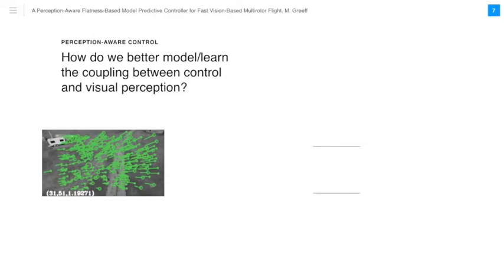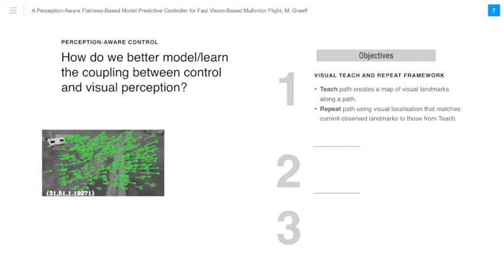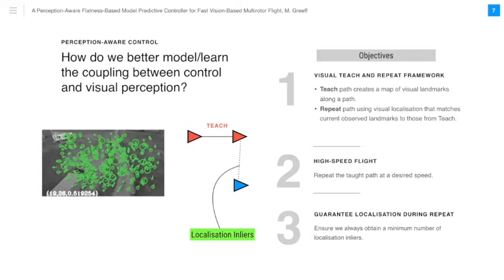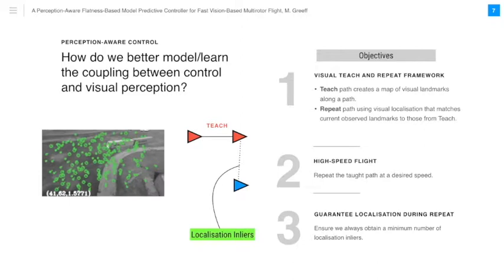So how do we better model this coupling between control and visual perception, and how do we use this model to design a perception-aware controller? To do this, we further frame the problem. In this work, we have three key objectives. We work within a visual teach and repeat framework. The teach path creates a map of visual landmarks along a path. It is stored as a set of vertices and edges, which include all the landmarks seen at each vertex. Our aim is to repeat this taught path autonomously by matching current observed landmarks to those from teach. Our successfully matched landmarks are our localization inliers. Our second objective is to repeat this path with some desired speed, while achieving our third objective, which is to guarantee localization by ensuring that we always obtain a minimum number of localization inliers.